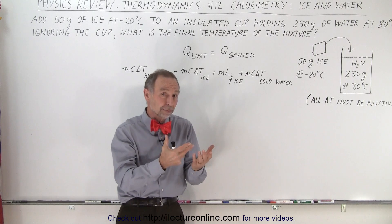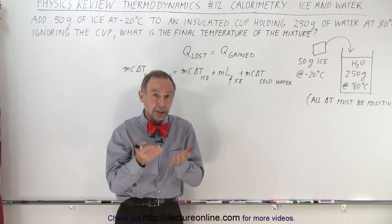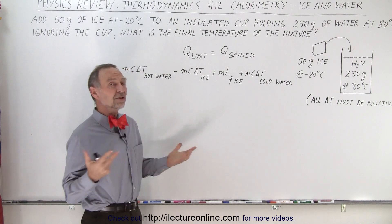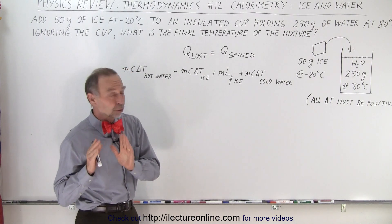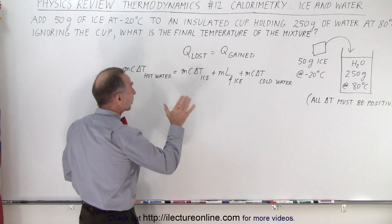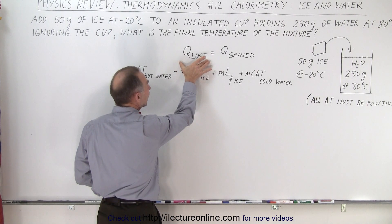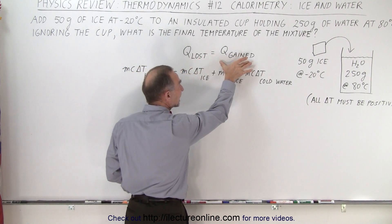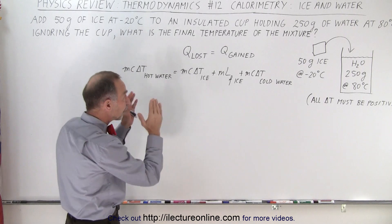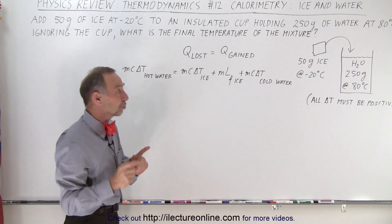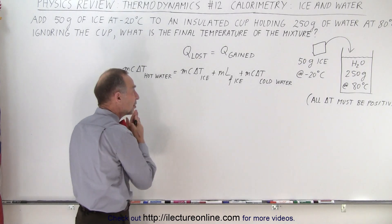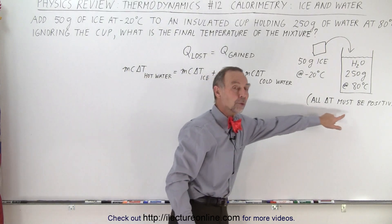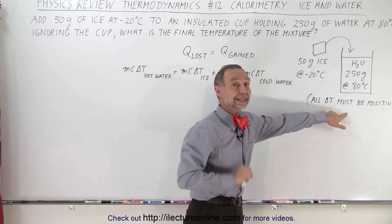Presumably all the ice will melt and there will be some water mixture in the cup at some final temperature. To solve this, we set up an equation: we add up all the heat lost by the hot objects and equate that to all the heat gained by the cold objects. We want to make sure that every delta T — every change in temperature on both sides of the equation — must always be positive, otherwise you will not get the right answer.